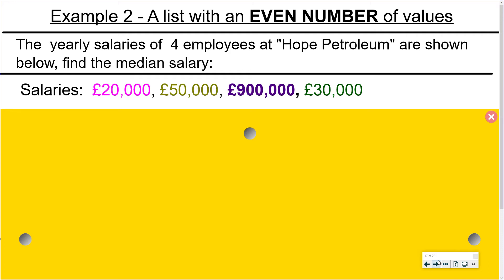Example two. This example is going to show us a list which has an even number of values. So the yearly salaries of four employees at Hope Petroleum are shown below. Find the median salary.